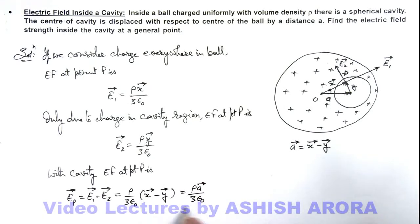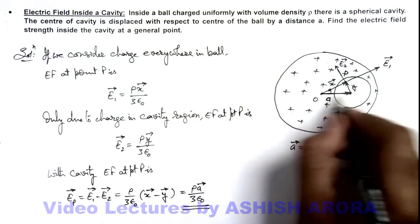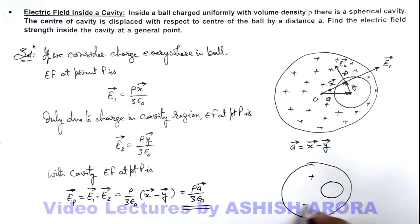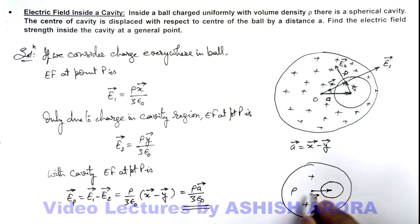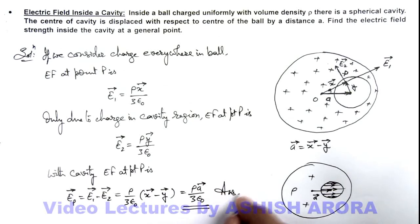This result says there is a uniform electric field within the cavity region. At every point within the cavity, the electric field exists in the direction of a. So if this is a ball within which there is a cavity and the charge density is ρ everywhere, then the position vector of the cavity center with respect to the ball center is a, and at every point inside the cavity, the electric field is uniform and directed along the vector a. This is the answer to this situation.